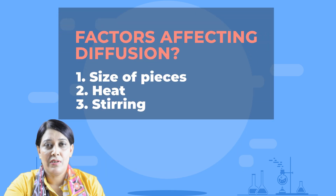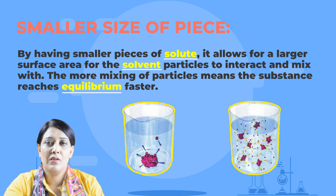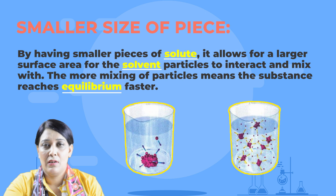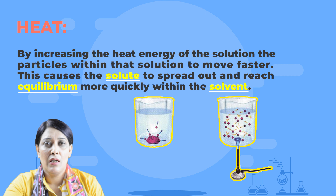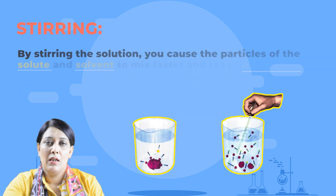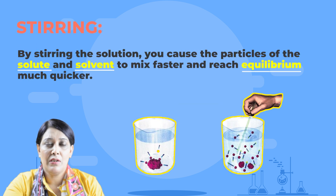The three factors affecting diffusion are: firstly, size of pieces; secondly, heat; and thirdly, stirring. By having smaller pieces of solute, it allows a larger surface area for the solvent particles to interact and mix with — more mixing means the substance reaches equilibrium faster. By increasing the heat energy of the solution, the particles mix faster, causing the solute to reach equilibrium more quickly. By stirring the solution, you cause the particles of solute and solvent to mix faster and reach equilibrium much quicker.